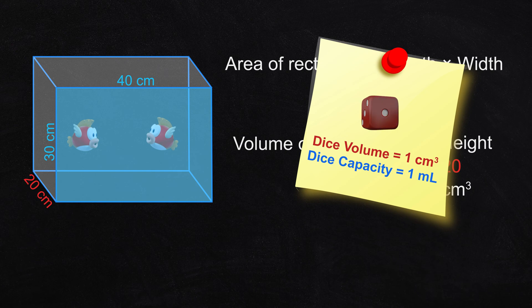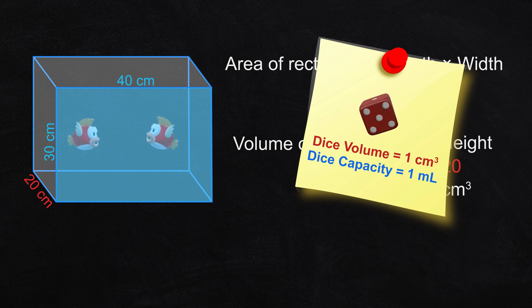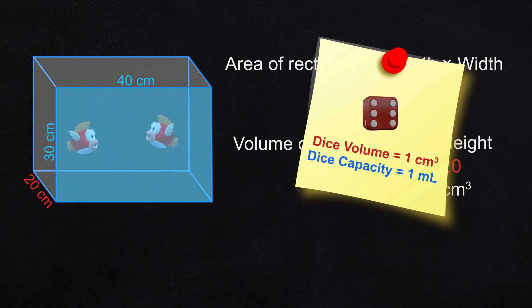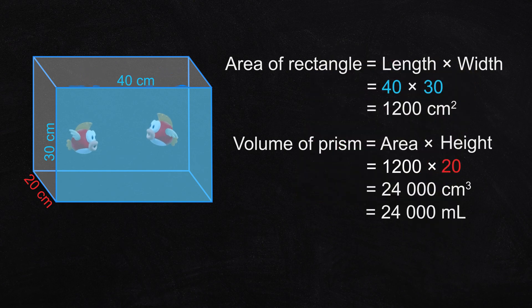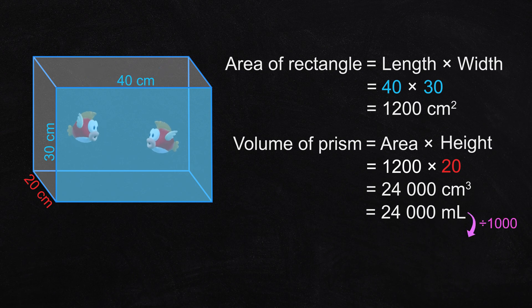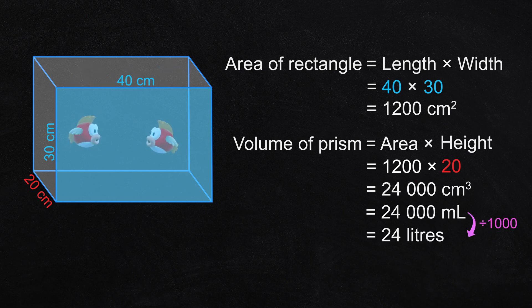One cubic centimeter and one milliliter are the same amount of space inside. So this fish tank has 24,000 milliliters of water. Now we'll divide that by 1,000 to change it to liters. That's 24 liters of water.